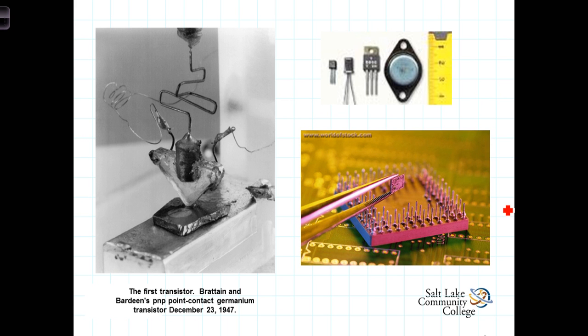Transistors are three terminal devices. The first functioning transistor dates back to 1947. Brayton and Bardeen of Bell Labs are credited with being the first ones to successfully build a functioning transistor. Since that time, transistors have become smaller and smaller and, according to Moore's law, shrinking about one-half in size every 18 months.